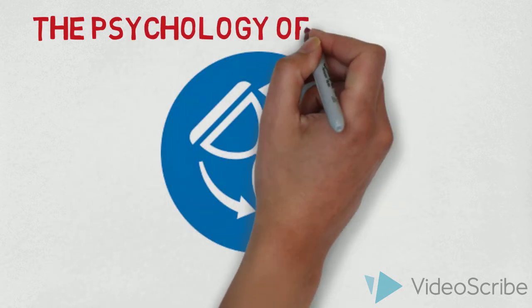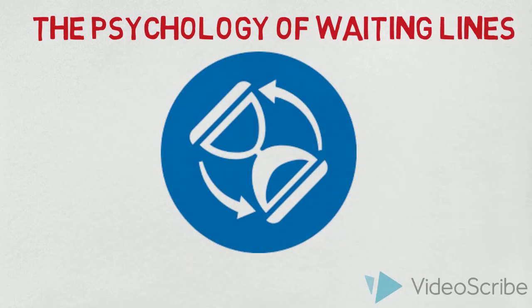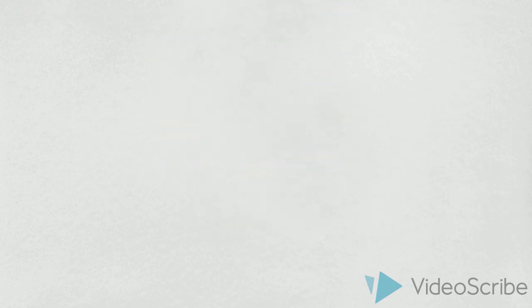David Maister, former professor of Harvard Business School, has identified propositions that explain the psychology of waiting lines that could be used by managers to influence the customer's waiting time experience.